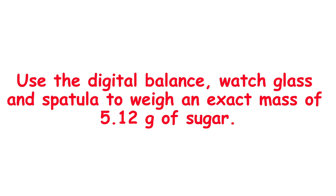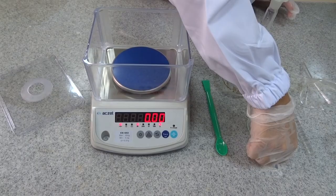Right now, use the digital balance, watch glass and spatula to weigh an exact mass of 5.12 grams of sugar. Pause the video to write the procedure, then play it back when you're ready.